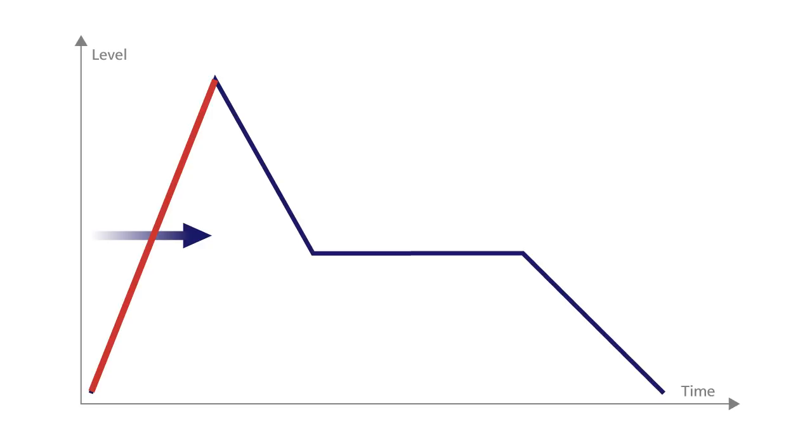The first stage is the attack stage. When a note is triggered, the envelope's level goes from zero to the maximum level. You can set the time over which this attack transition occurs.